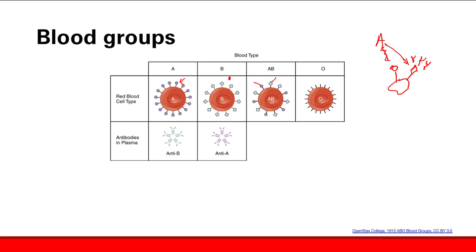What antibodies will type AB have? Type AB will not have any antibodies at all because they see type A as self and they see type B as self on the bacteria — this is self, this is self — so no antibodies. Type O, they're going to have antibodies against both A and B.